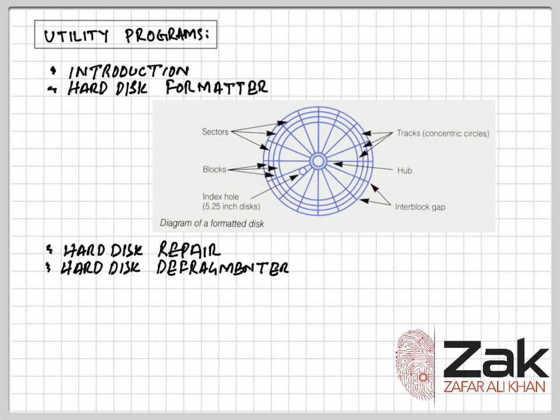A defragmenter utility reorganizes the file storage to return it to a state where all the files are stored in one block across a sequence of sectors. For a large disk this will take some time.